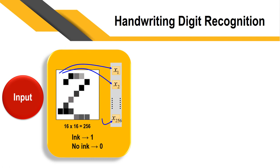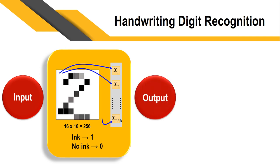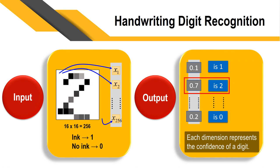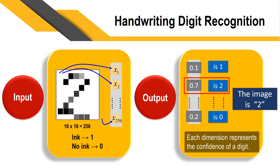This is the input layer, and on the output side we will have 10 digits — that is from 0 to 9. Each output will give a confidence level or strength level. Since the input is the number two, the second output will get the maximum strength, and therefore the machine will recognize the digit as number two.